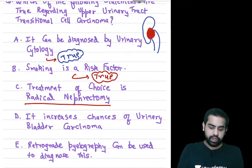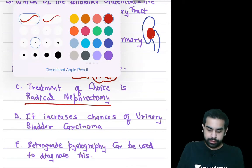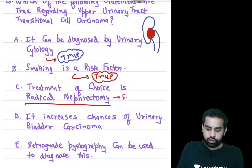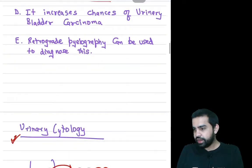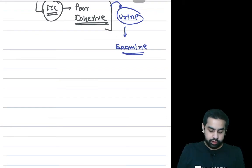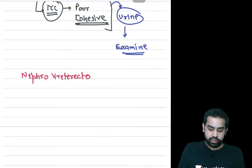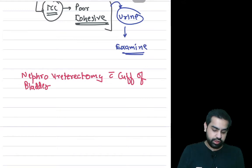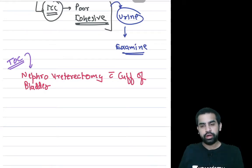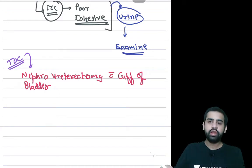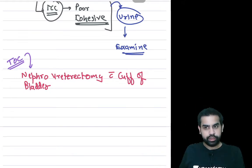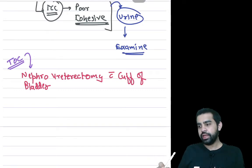The treatment of choice for TCC of the renal pelvis is nephro-ureterectomy with cuff of bladder. This is not the same as radical nephrectomy. In radical nephrectomy, you don't remove the entire ureter. In TCC, you must remove the entire ureter along with a cuff of bladder — this is very important. Option C is therefore a false statement.